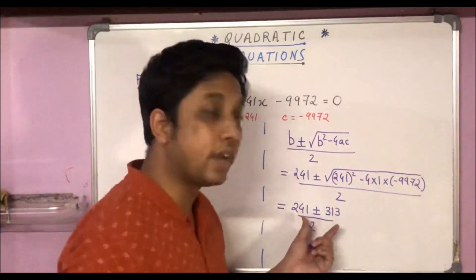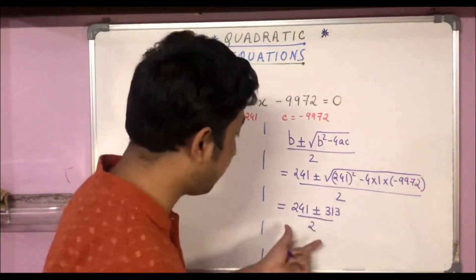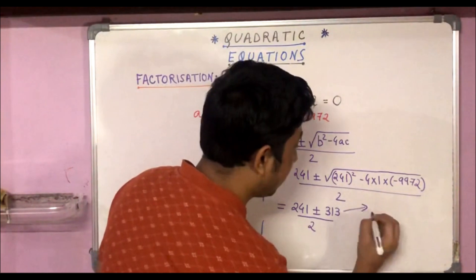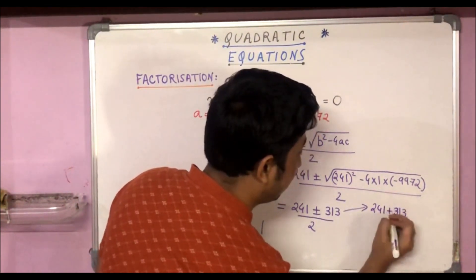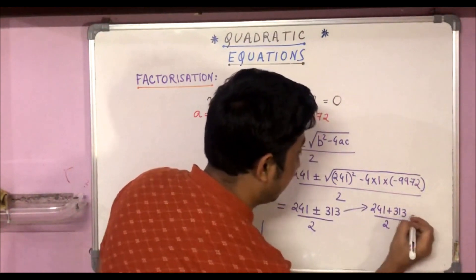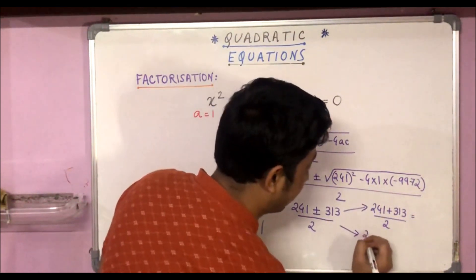Now we get two values, one by choosing plus and one by choosing minus in this expression. So let's do it: 241 + 313 by 2, and 241 - 313 by 2.